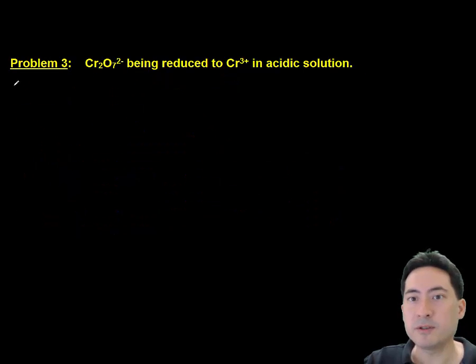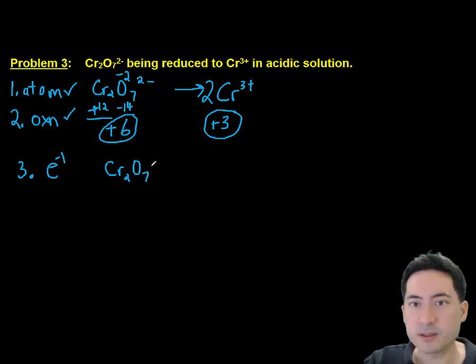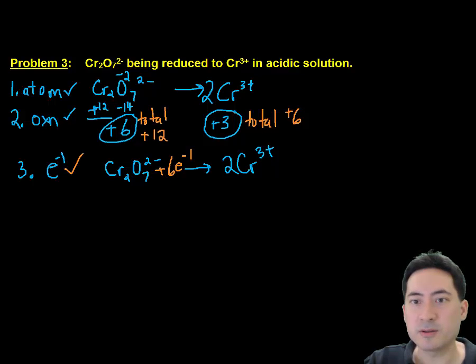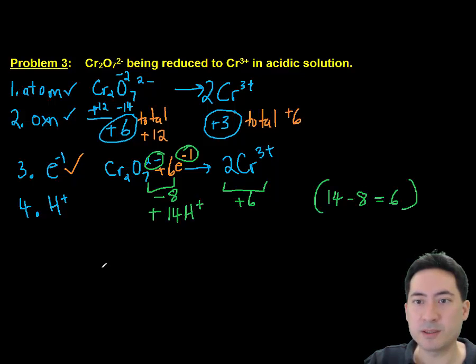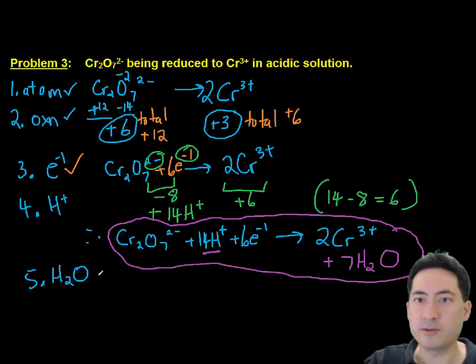Problem 3: dichromate. We need to add an extra atom on the right-hand side. Then do the oxidation numbers, +6 to +3. There's +12 on the left, +6 on the right, so add 6 electrons. To balance charges, the dichromate is -2, 6 electrons makes -8 total. To get from -8 to +6, add 14 H+ to balance the charges, then 7 H2O on the right to balance the hydrogens. That gives the finished half-reaction.